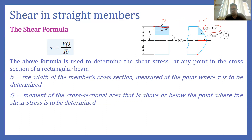To find shear stress at the neutral axis, the area above it is b times h/2, and the centroid of that area is at a distance of h/4 from the neutral axis. So Q at the neutral axis equals b times h/2 times h/4. This gives the maximum shear stress in a rectangular section.